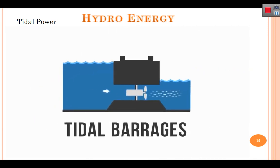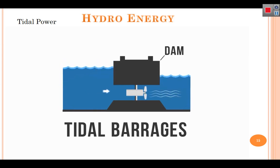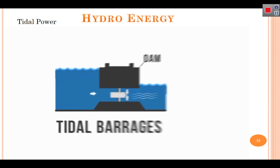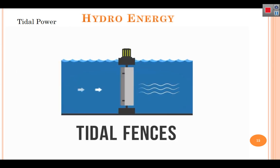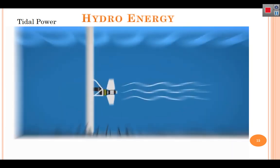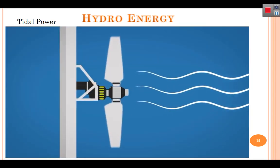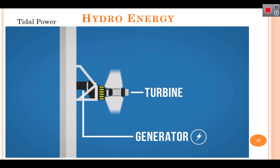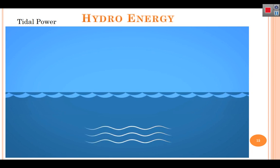Tidal barrages are the most efficient tidal energy sources — a dam that utilizes the potential energy from the change in height between high and low tides to turn turbines. Tidal fences are turbines that operate like giant turnstiles, while tidal turbines are similar to wind turbines but underwater. In both cases, the mechanical energy of tidal currents turns turbines connected to a generator to produce electricity.